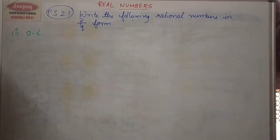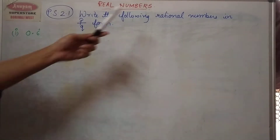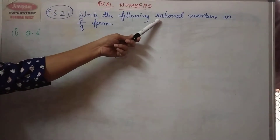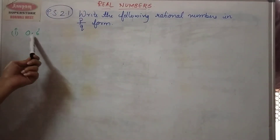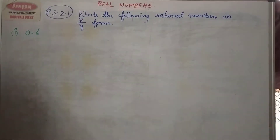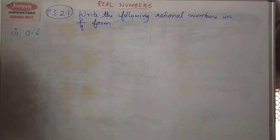Let us study today how to convert rational numbers in p upon q form. That means we are going to convert this in a fraction form.